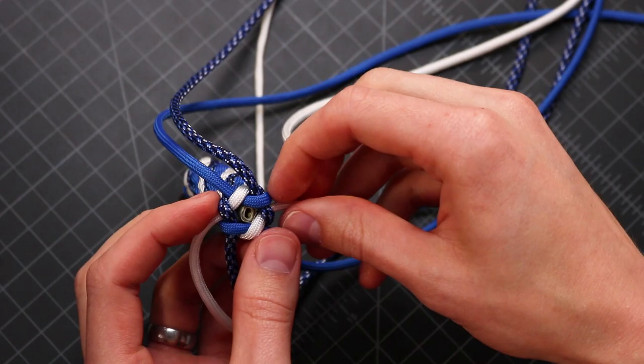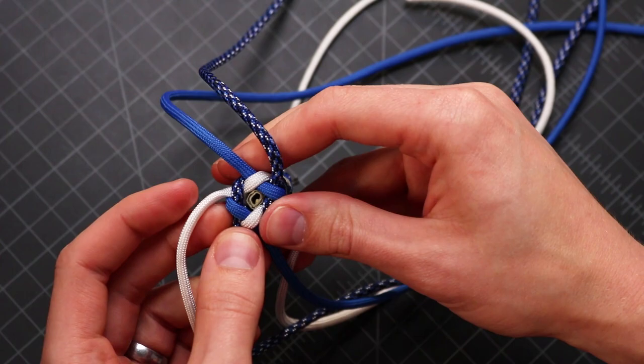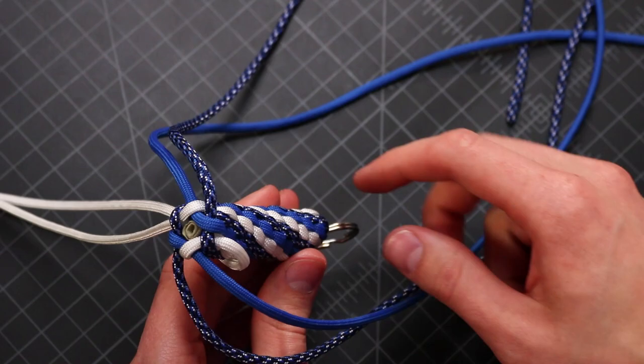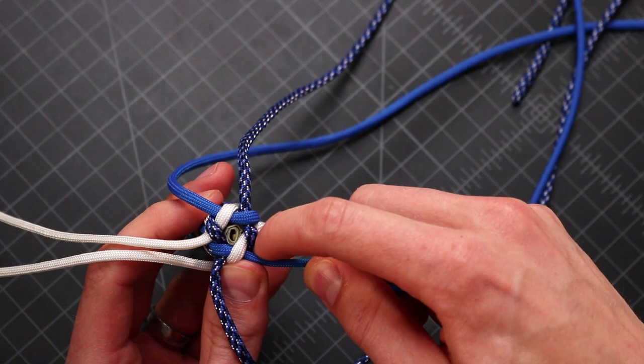So to finish it off we're just going to do a couple knots to taper it and make it look nice. So once you cinch down that top knot we're going to set these two white strands aside and do another four strand sinnet knot like on the top side. Let's tighten this a little bit more before I do that.